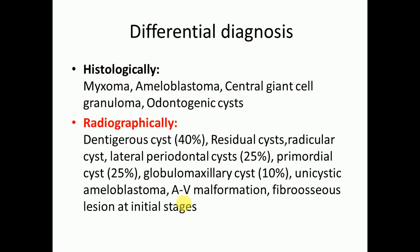For differential diagnosis, histologically OKC must be differentiated from myxoma, ameloblastoma, central giant cell granuloma, and other odontogenic cysts. Radiographically, differentials include dentigerous cyst, residual cyst, radicular cyst, lateral periodontal cyst, primordial cyst, globulomaxillary cyst, unicystic ameloblastoma, AV malformation, and fibro-osseous lesion at initial stages.